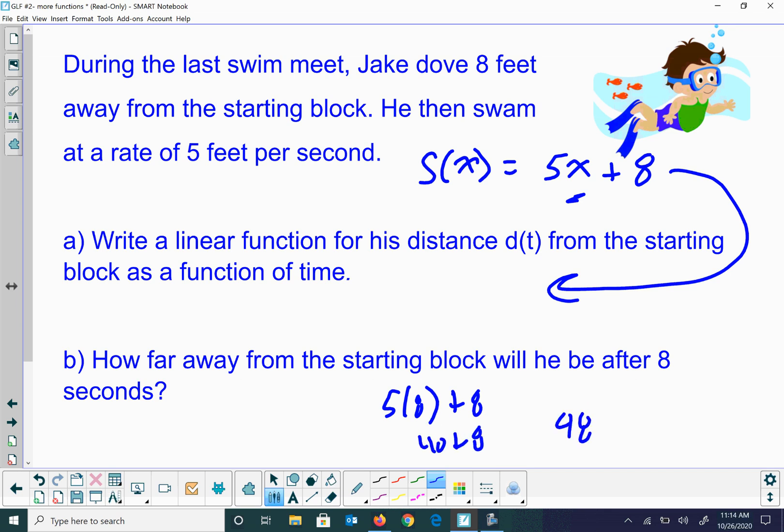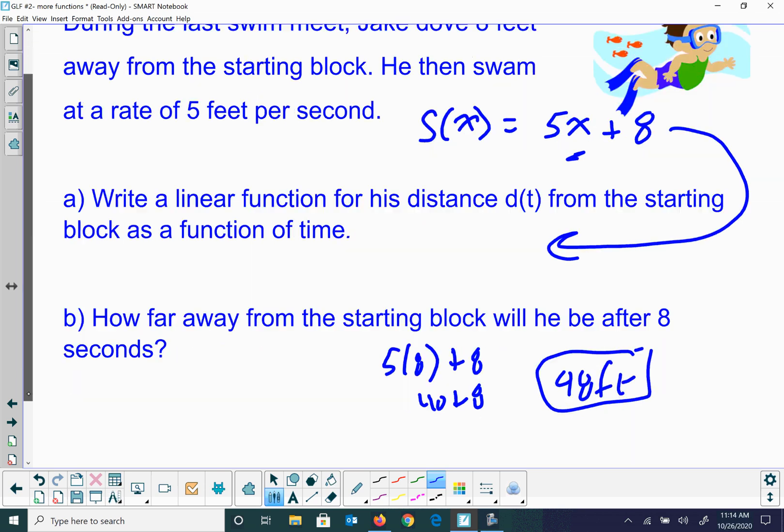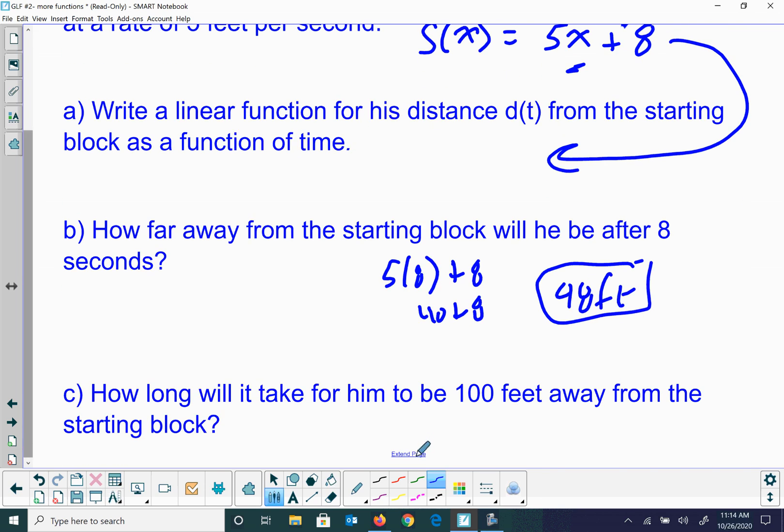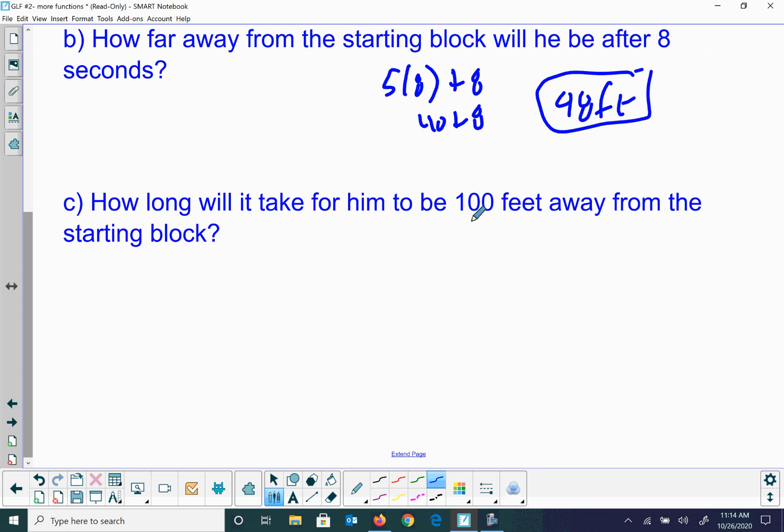How long would it take him to go a hundred feet? So that's gonna be 100 equals 5x plus 8, and then we're gonna solve that. Subtract 8 from both sides, that's gonna give me 92 equals 5x, divide each side by 5.